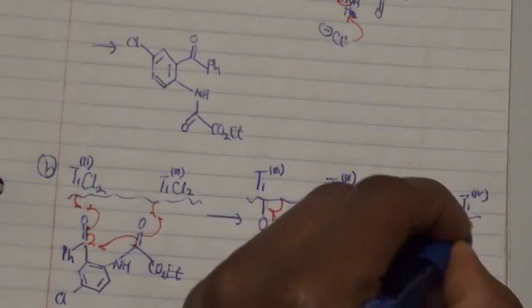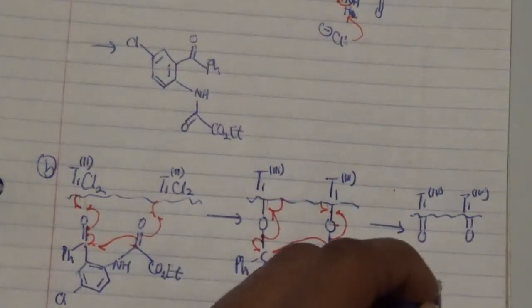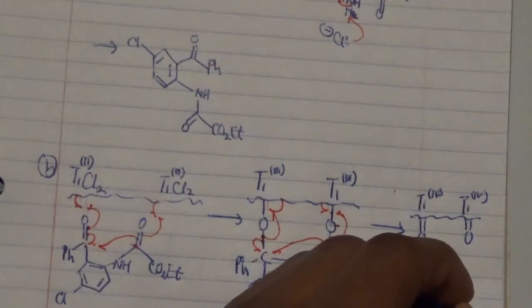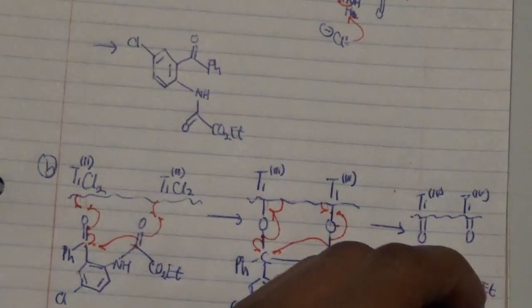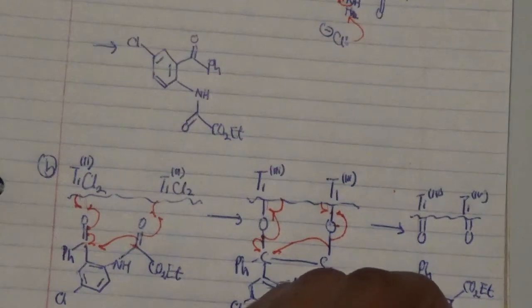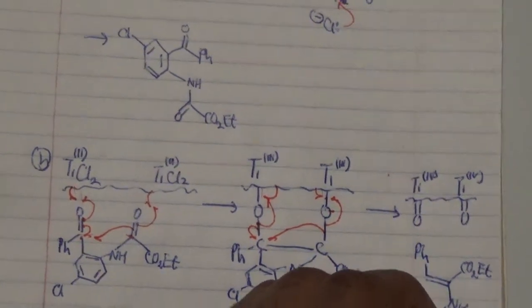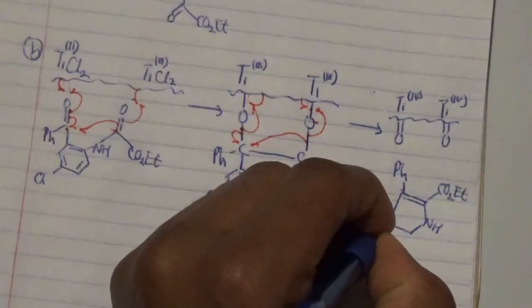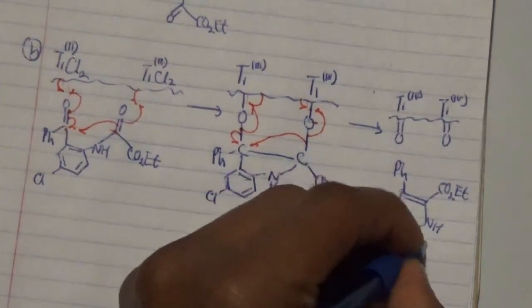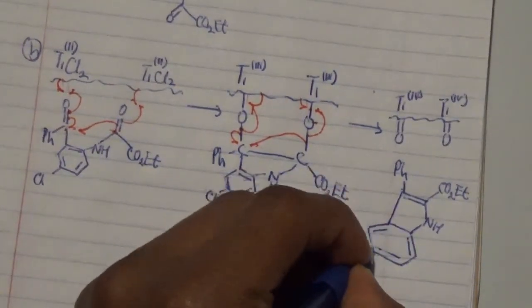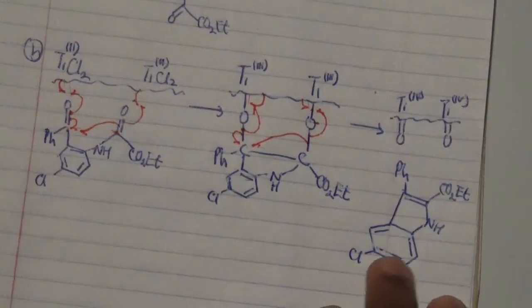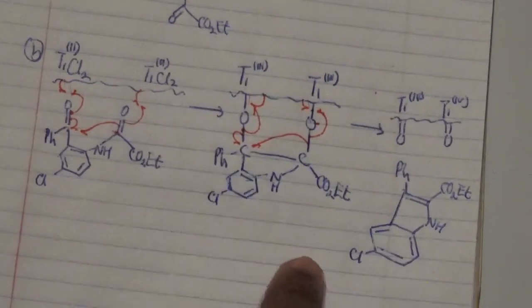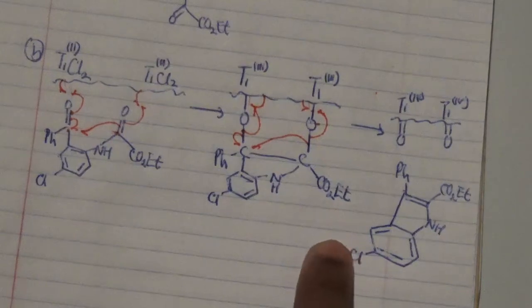The product has a double bond between the two carbons, the phenyl group, a carbon-carbon double bond, CO2Et on one side, the nitrogen-hydrogen group, and a zinc-chlorine group attached. This is our target product — the final step in section B — and represents the McMurray mechanism product.